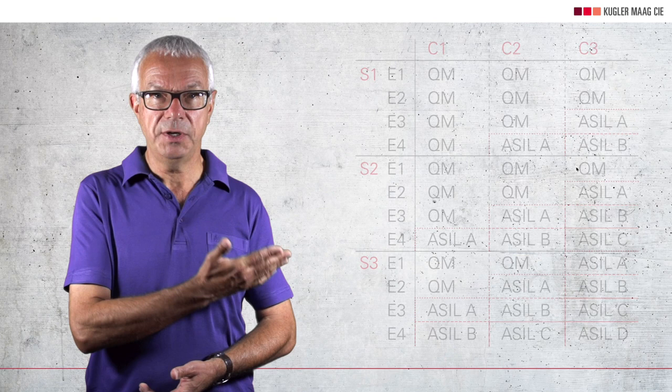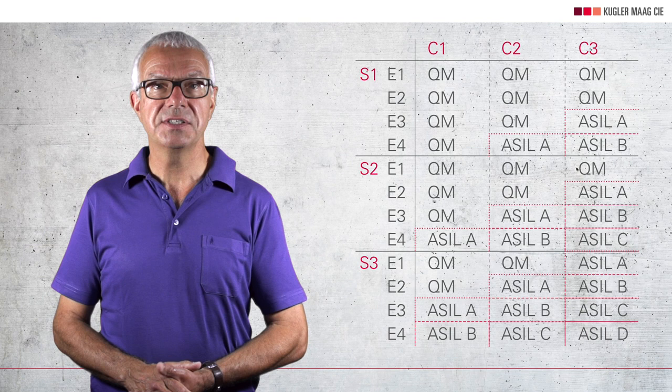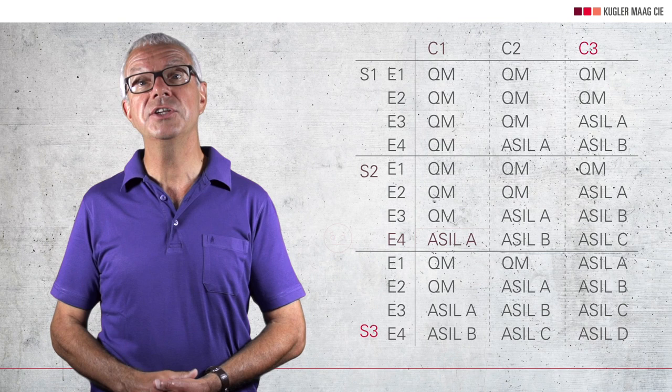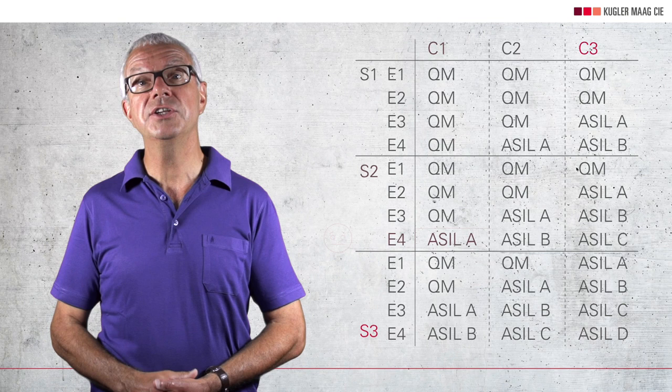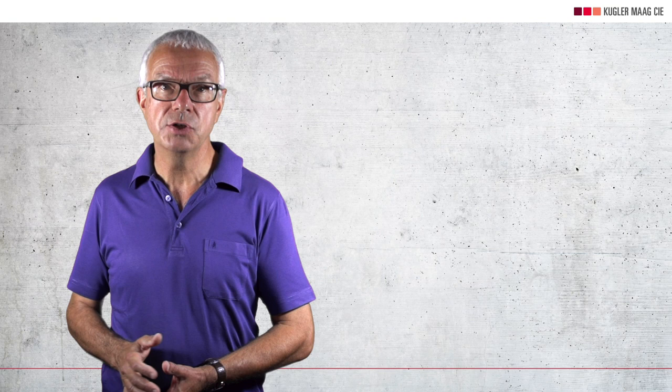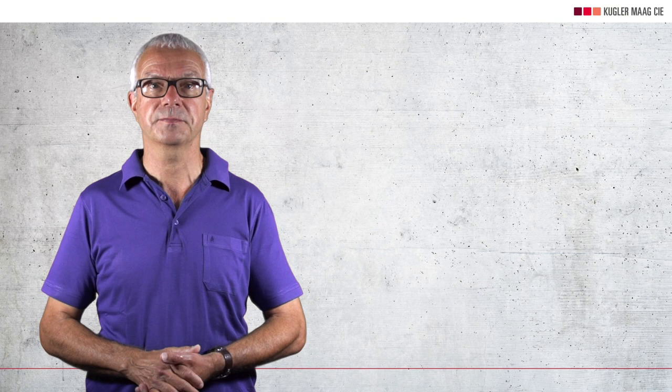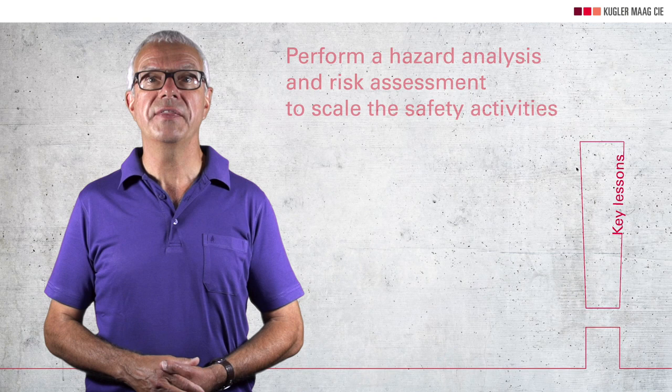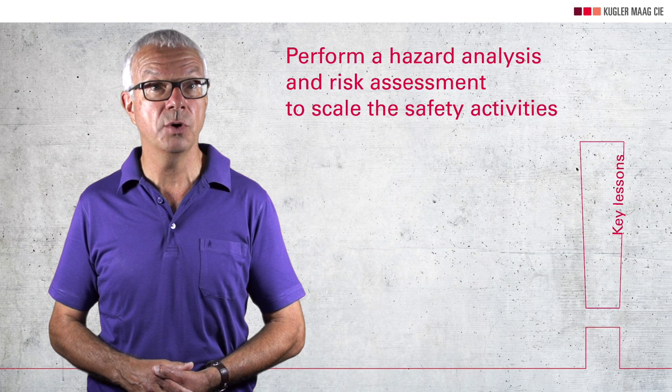For example, faulty steering by the lane keeping assist system into the oncoming lane could be classified as ASIL D, as this can lead to serious injury. In contrast, incorrectly displaying a recognized traffic sign is less critical because a traffic sign recognition system does not interfere with vehicle operation and the driver generally reacts appropriately. Once you've carried out these assessments, you write down safety goals for further development. Safety goals are high-level safety requirements suitable for mitigating hazardous events. We have two key lessons here: the item is subjected to a hazard analysis and risk assessment in order to scale the safety activities, and safety goals are formulated.